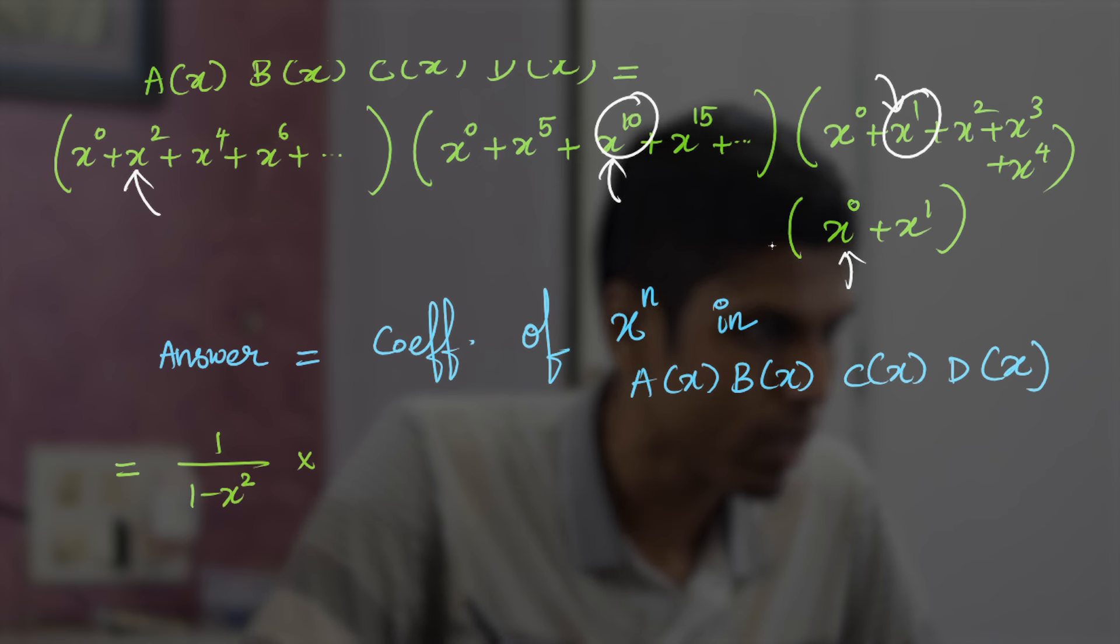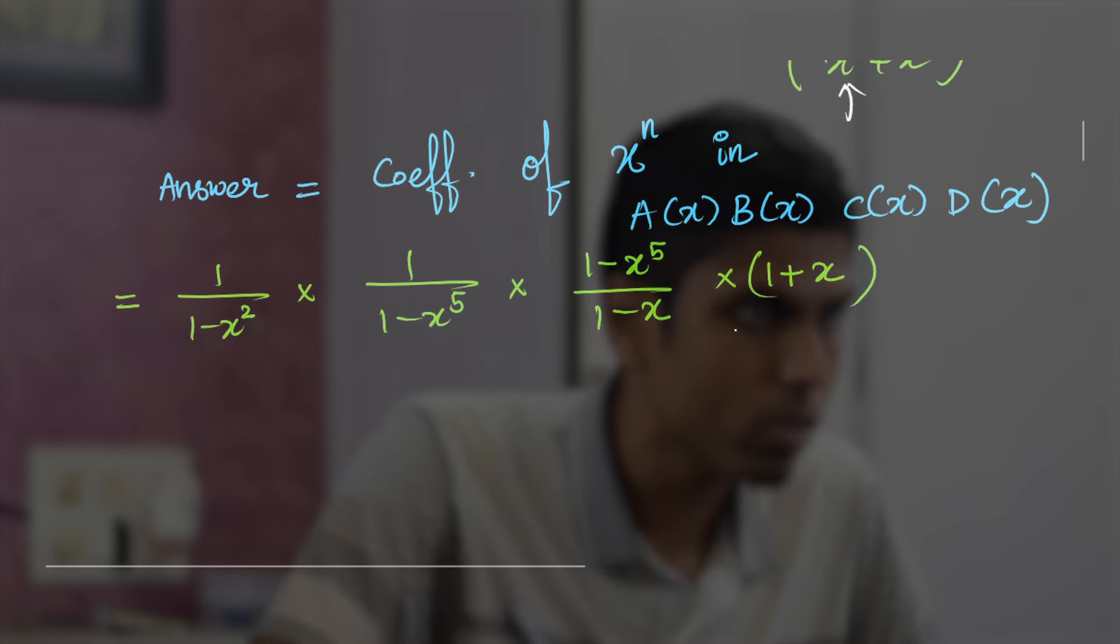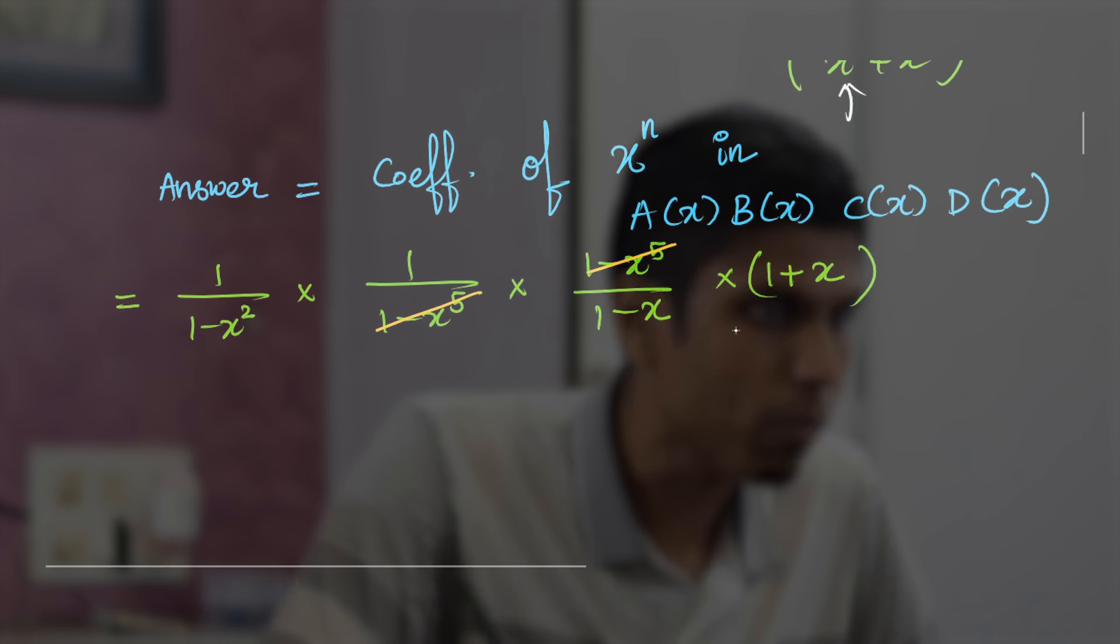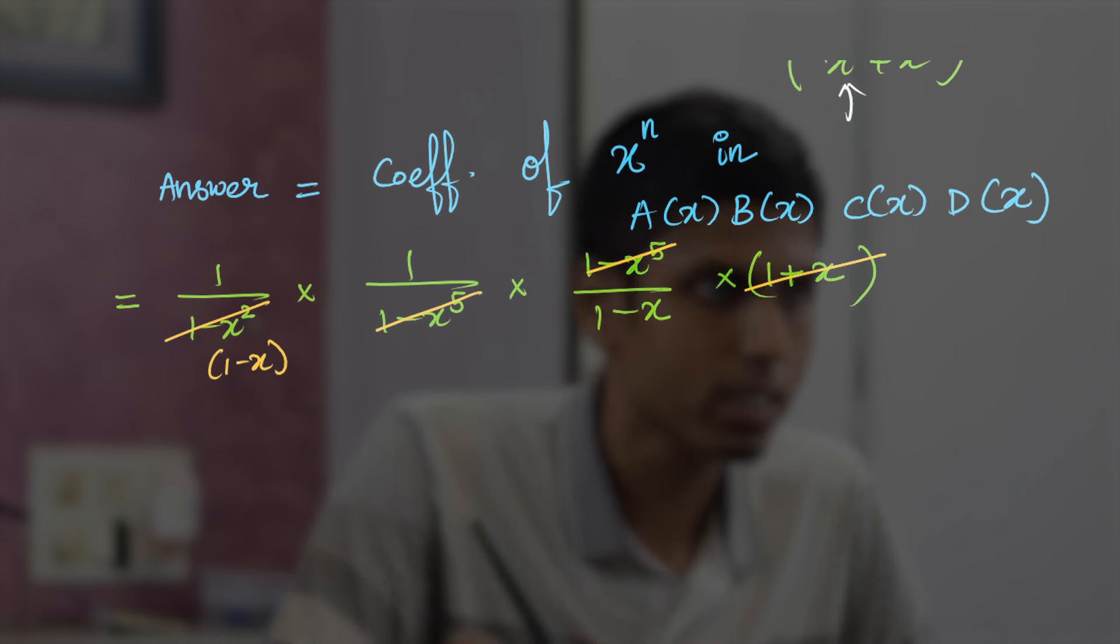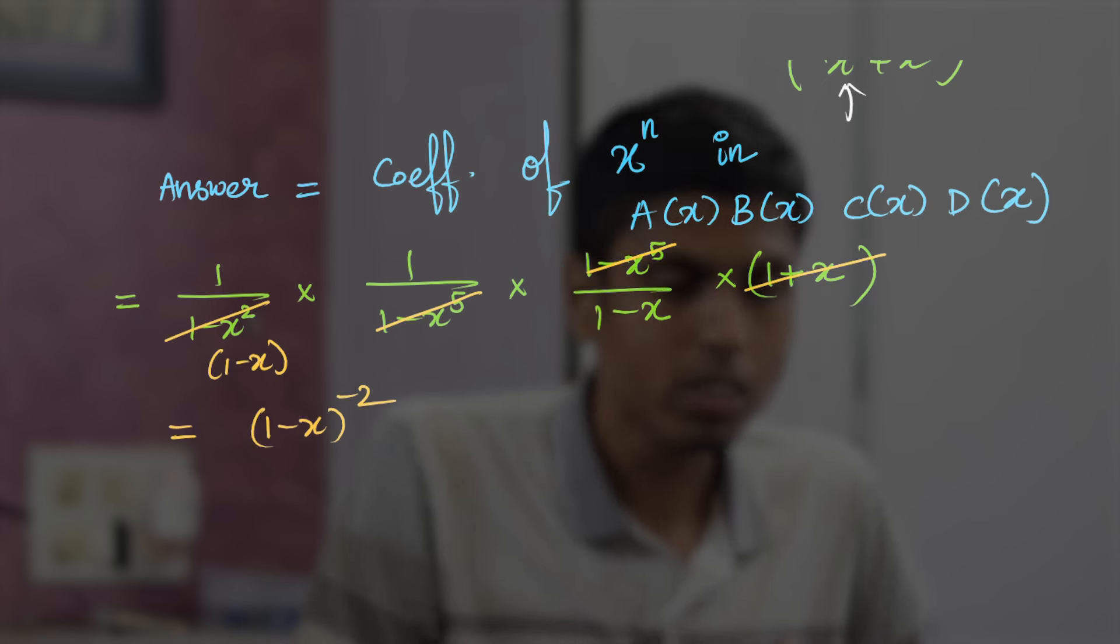So let's substitute this and see what happens. If you do that, you will get 1/(1 - x^2) · 1/(1 - x^5) · (1 - x^5)/(1 - x) · (1 + x). Now we can cancel a few terms. Notice that 1 - x^5 and 1 - x^5 go off. And 1 + x cancels with 1 - x^2 to have 1 - x remaining. And the total product is nothing but (1 - x)^(-2).